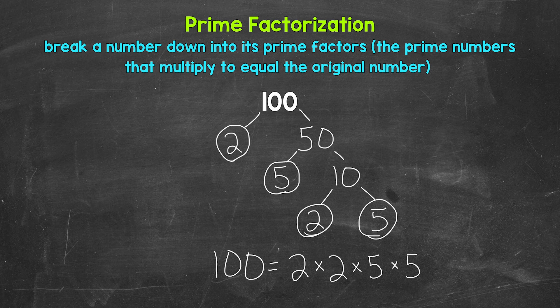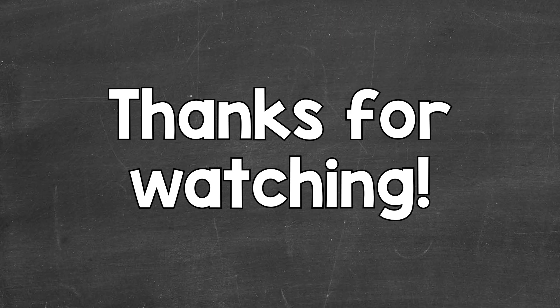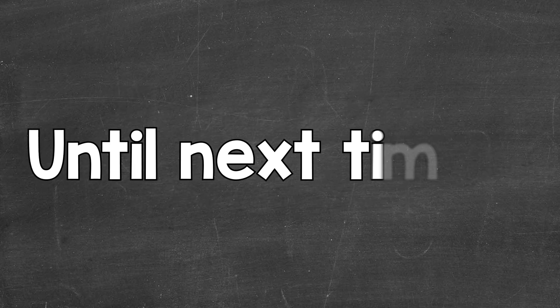2 times 2 is 4, times 5 is 20, times 5 is 100 — so we are correct. So there you have it: the prime factorization of 100. I hope that helped. Thanks so much for watching. Until next time, peace.